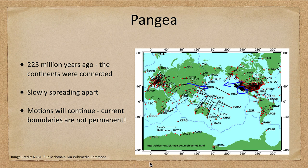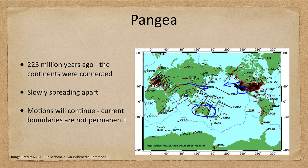These will continue to change. Look at Australia, for example — Australia is very strongly moving north. If you could come back in a hundred million years, Australia could be in an equatorial region or maybe even north of the equator. So again, the boundaries we see today will not be permanent.